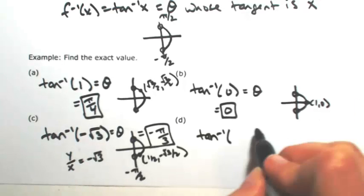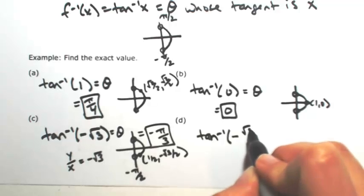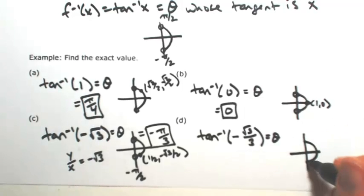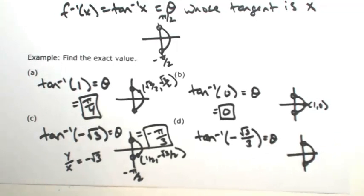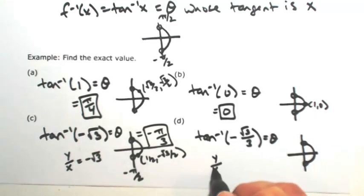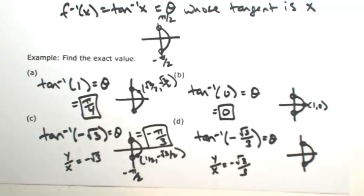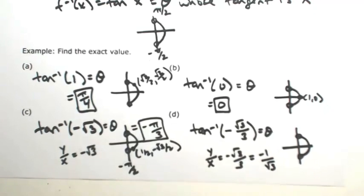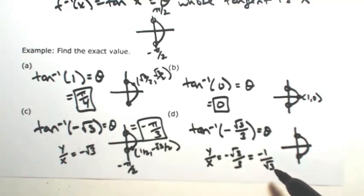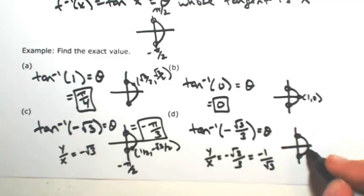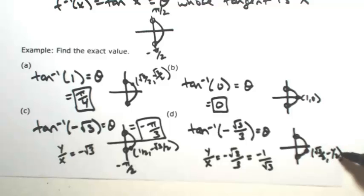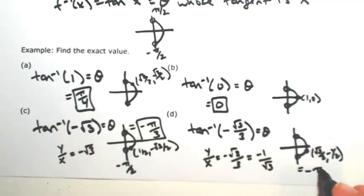Finally, find the inverse tangent of negative √3/3. Again, this is an angle on the right side of the unit circle, and because it's negative, it's in the fourth quadrant. I'm looking for where y/x equals negative √3/3. Since negative √3/3 is already rationalized, the √3 must be in the denominator — meaning the x-coordinate corresponds to √3. So the point is (√3/2, −1/2). Dividing y by x gives −1/√3, which rationalizes to −√3/3. The clockwise angle here is negative π/6.